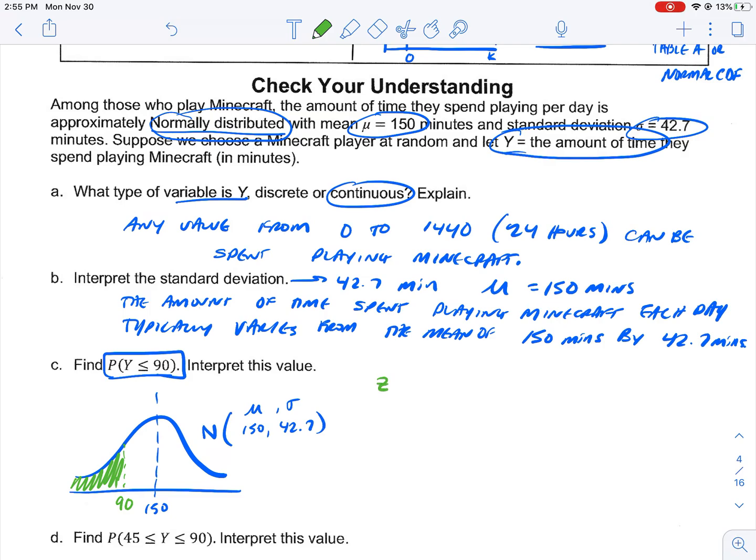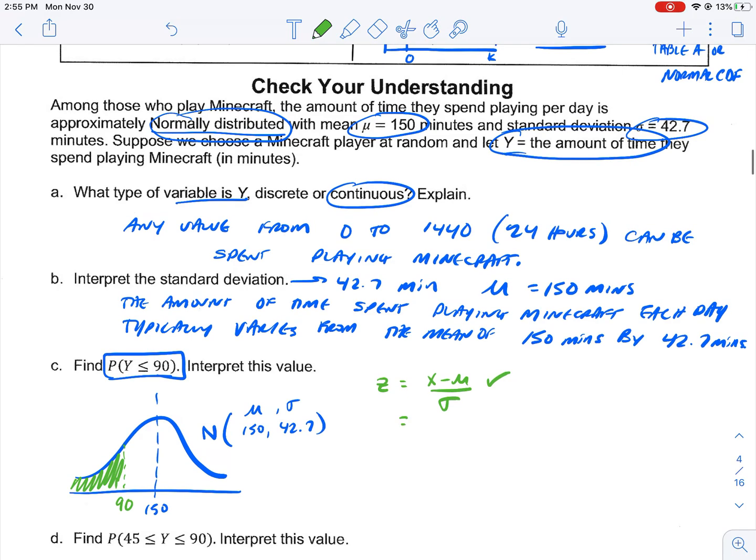Let's use the z-score method. So, if we use our z-score method, our z is equal to x minus mu over standard deviation. Remember, I've got to have that formula to get full credit. So, then I would do 90 minus 150 over 42.7. And that's going to give us a negative 1.41.